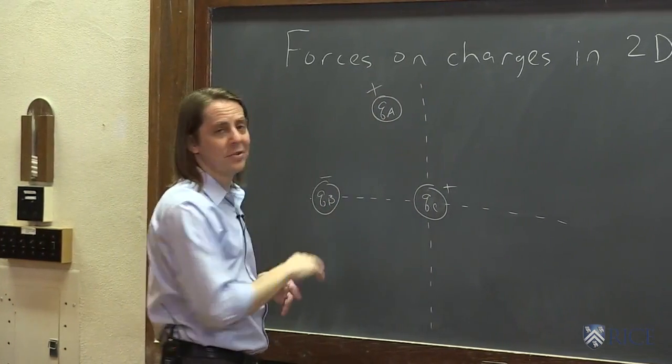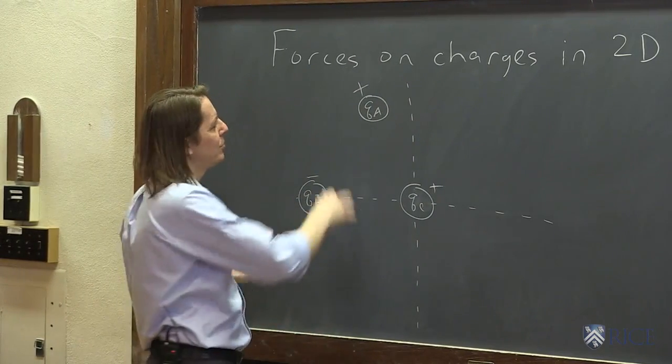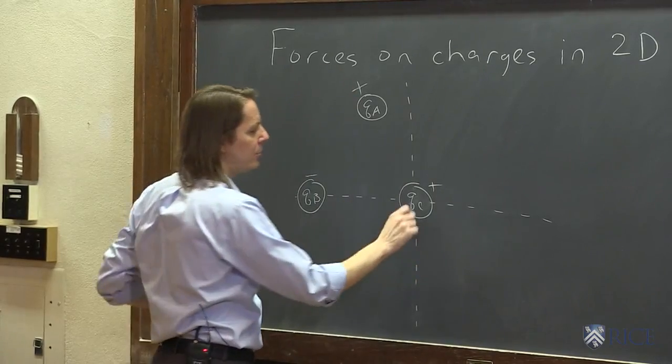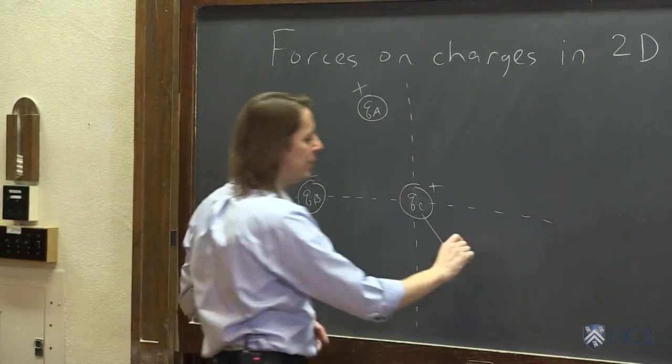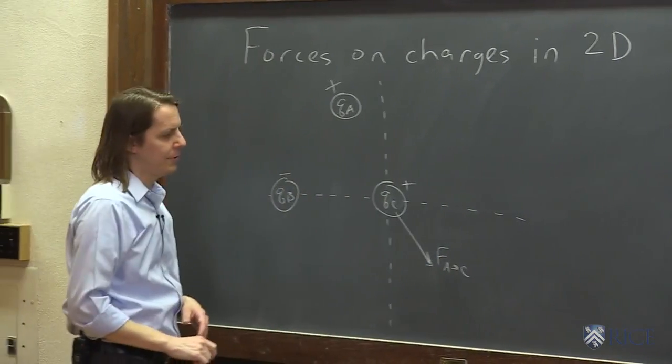Well let's see, the charge magnitudes are all about the same, and the separations are about the same, so we can kind of do this graphically by saying well, this is positive and this is positive, so they're going to repel. So we have force kind of like that - that would be force F_a to c, the one that a applies to c.